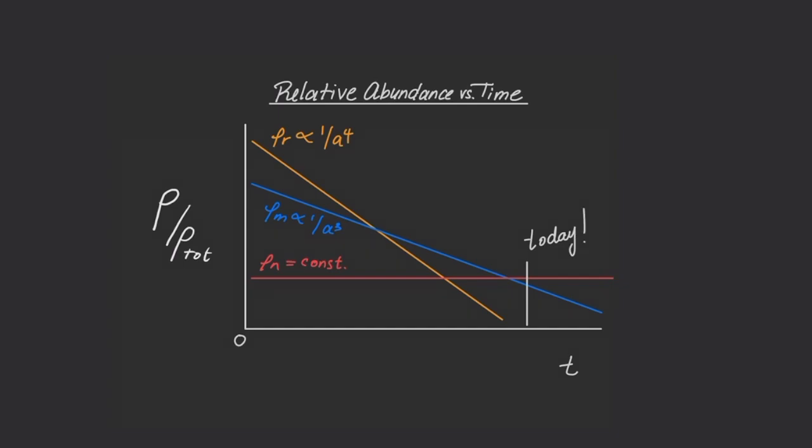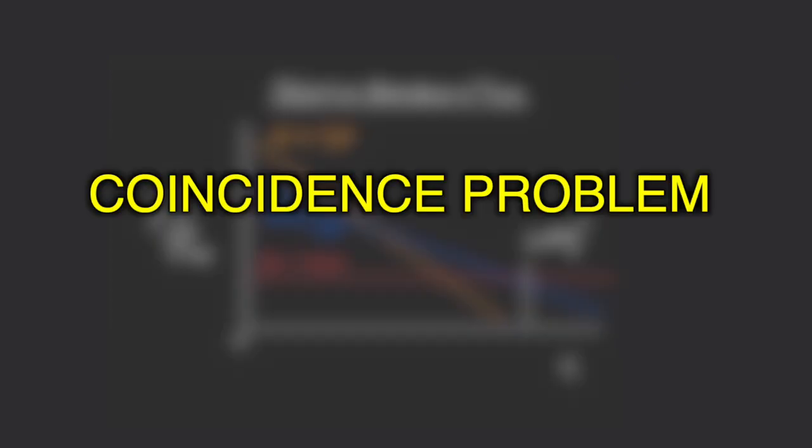Isn't it peculiar that we live in a time when the relative abundances of matter and dark energy are of the same order of magnitude? This is called the coincidence problem.